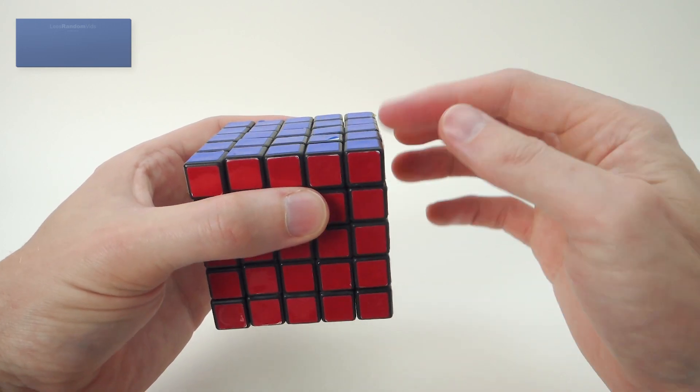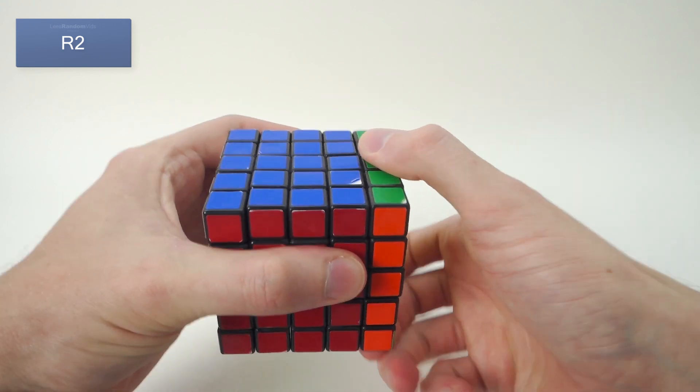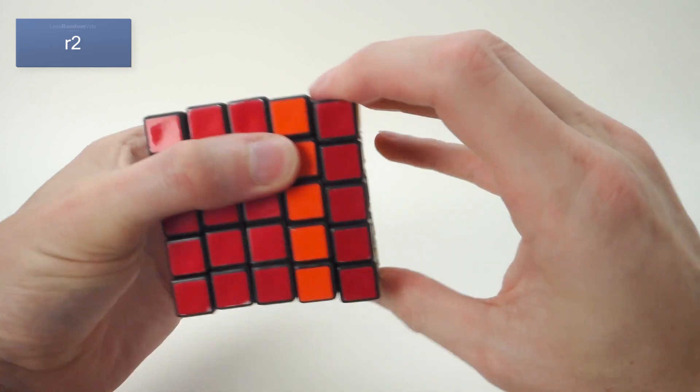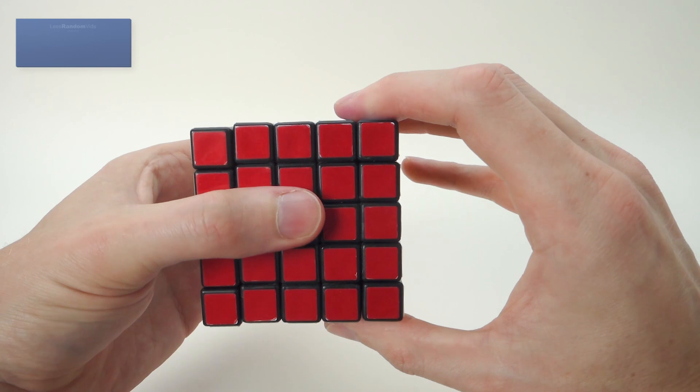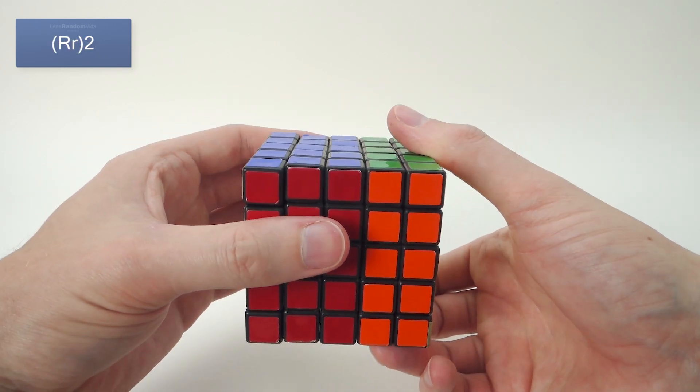And if we want to turn them twice, 180 degree turn, it would be r2. Or if it was the inner face, it would be a small r2. And if it was both, would be capital R, small r in brackets, 2.